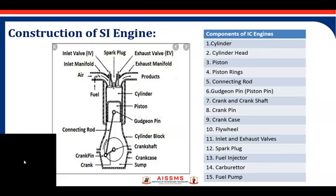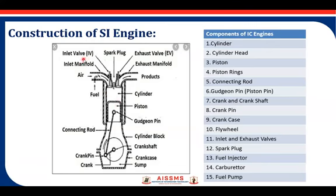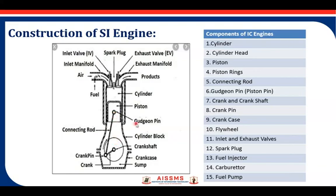You can see the diagram of the Spark Ignition Engine. Here we can see the Inlet Valve, then Inlet Manifold. The air-fuel mixture will be coming inside through the Inlet Manifold. Here we have the Piston, then Cylinder. The Piston is connected to the Crankshaft using a Connecting Rod with Piston Pin and Crank Pin. Here you can see the Crank. The lower side of the IC engine is called the Crank Case. The Sump is there for oil.